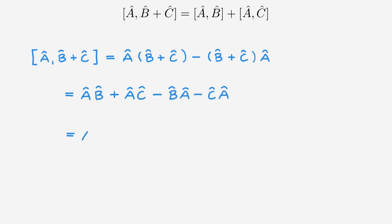Reordering we get AB minus BA plus AC minus CA. These two terms give the commutator of A with B. And these two terms give the commutator of A with C. And this completes the proof.